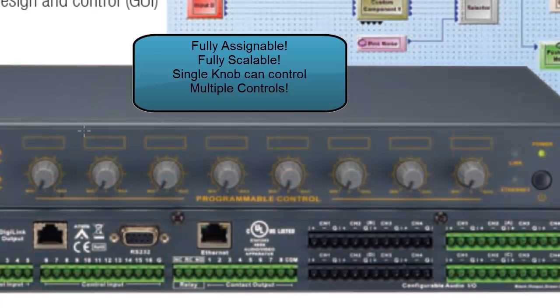Another important feature of these knobs is that they are 100% scalable. Our input sensitivity is -54 dB to 0 dB, and level controls within the design go from -90 dB up to +20 dB. You can scale a knob for any leveling control to a custom range, such as -10 to +10 dB or -3 to +8 dB — whatever you want to give the user control of. You can give them as much control, as little control, or absolutely no control whatsoever.